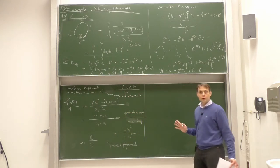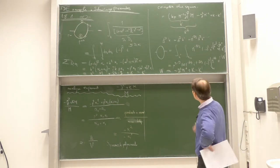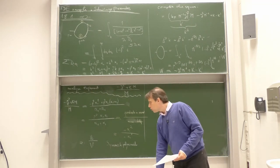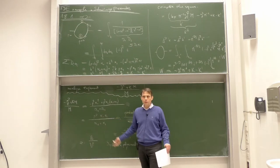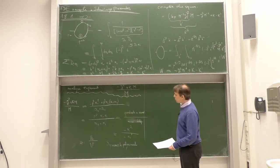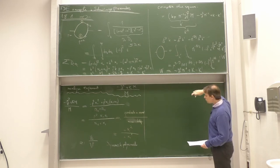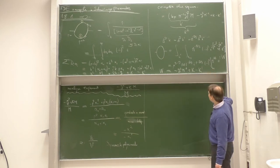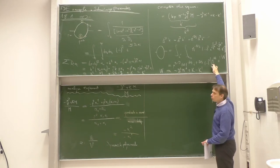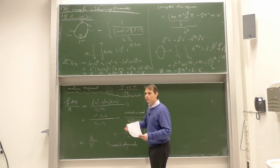We have now calculated the Symanzik polynomials for this graph: V equals p²·α₁·α₂ and U equals α₁ plus α₂. Let us use this to analyze the behavior of the alpha integral. The loop has been rearranged into an alpha integral over two alphas, and the integrand has the structure of a polynomial to some arbitrary power times an exponential function. The exponential is the ratio of the two Symanzik polynomials.